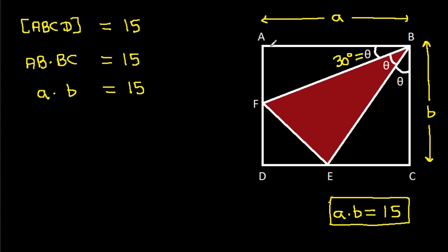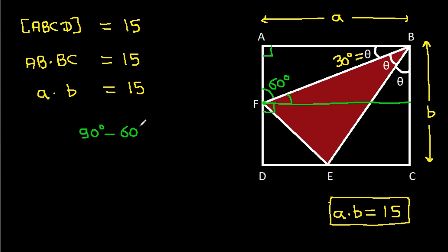This angle is 90 degrees, so this angle will be 60 degrees. From point F, if we make a perpendicular on AD, this angle will be 90 minus 60 minus 60 degrees, that is 30 degrees. Suppose this point is P and this point is Q.